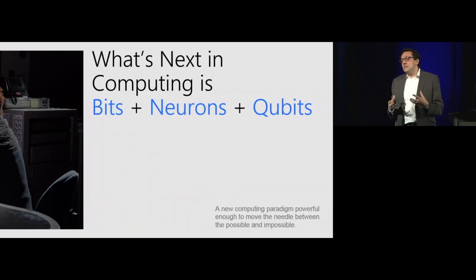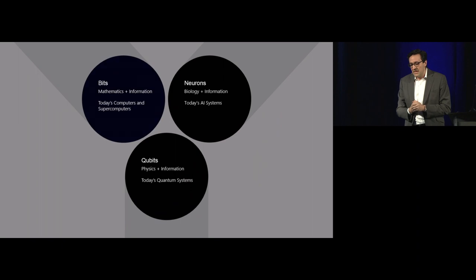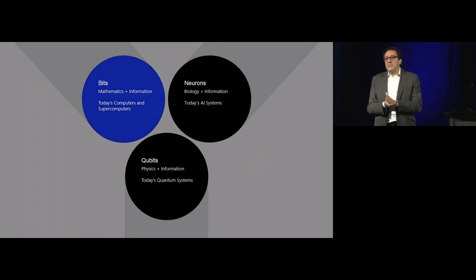It is because of the convergence of three core areas. The thesis is that what is next in computing is this combination of bits plus neurons plus qubits. It is useful to reflect on what we have had over the last 50 or 60 years. If we were to summarize the last 60 years of computing, we would talk about the world of bits.